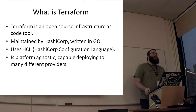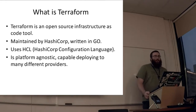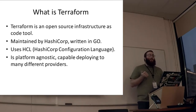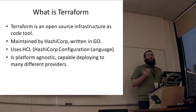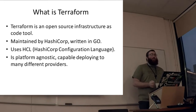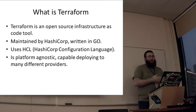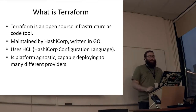Terraform is platform agnostic, meaning it can deploy to multiple different platforms. When I say platform or provider, I'm talking about things like AWS or Azure, or if you're on-prem, things like Red Hat OpenShift or OpenStack. Basically any platform that provides an API that allows you to make calls and perform actions through that API, you can automate through Terraform. Terraform supports lots of different platforms, so chances are the platform you're looking for is supported in at least some sense, and you can expand on that yourself.